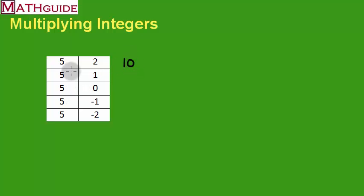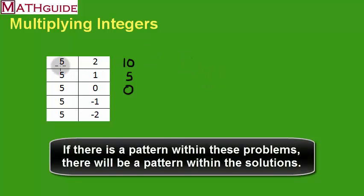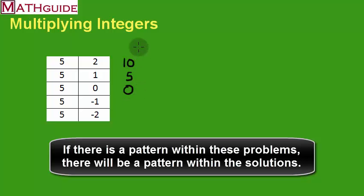Five times two is ten — go back to your multiplication table if you don't know that. Five times one is five. We know that five times zero is zero. Mathematics follows a pattern. So if we have the number five in the first column that's not changing, and these values changing by one — getting smaller by one — we would expect a pattern in the answer column. If we go from ten to five to zero, we're subtracting five each time. That's the pattern.